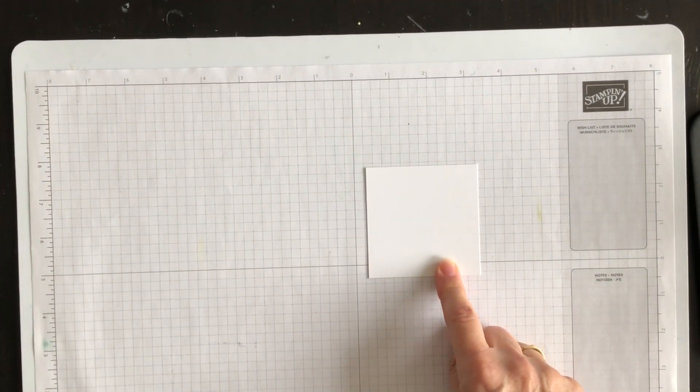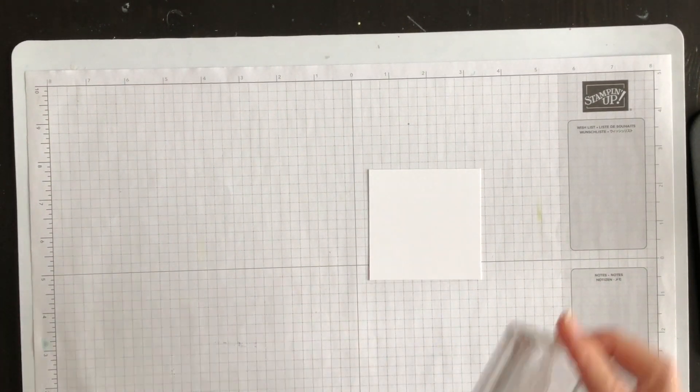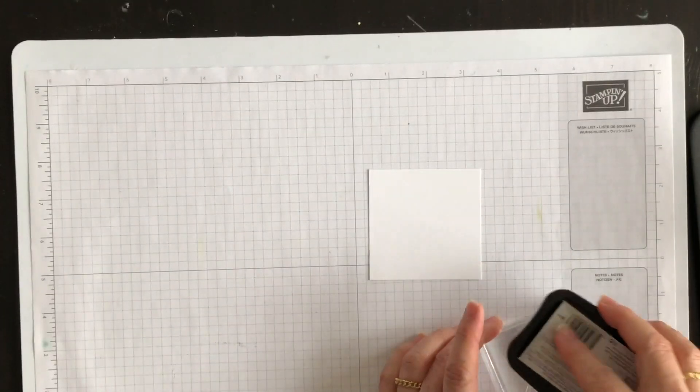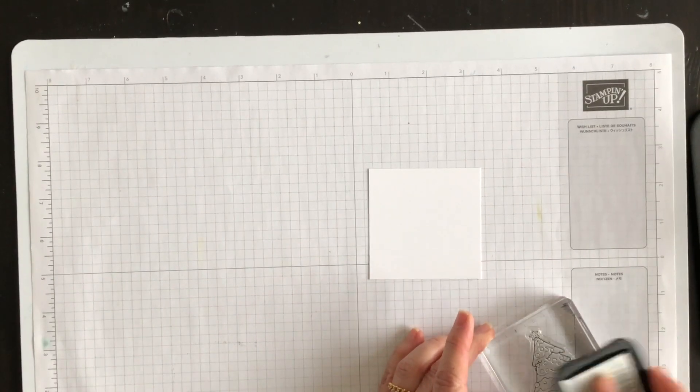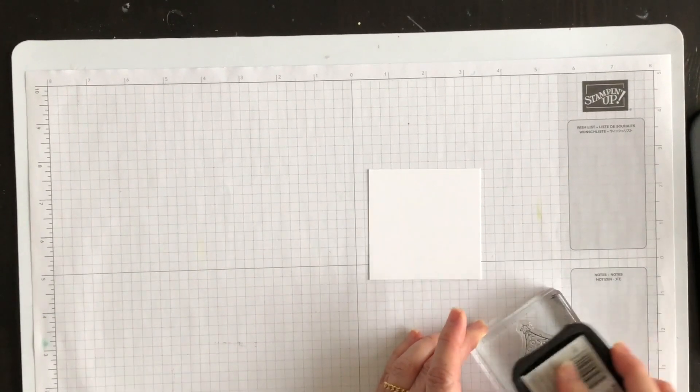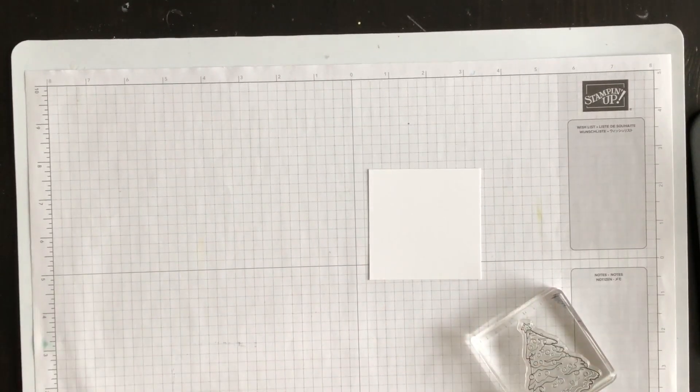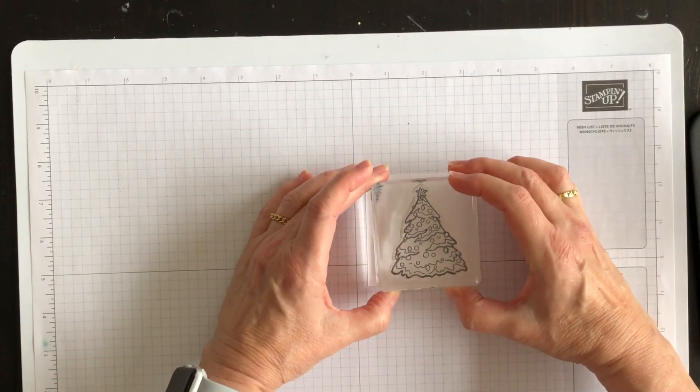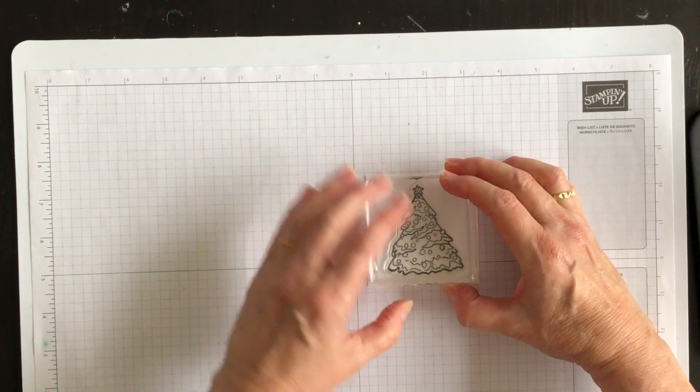I have a piece of basic white cardstock and I have the Christmas tree image ready to go. I'm going to use my Memento Tuxedo black ink to ink up the stamp and to stamp it in the center of this layer.